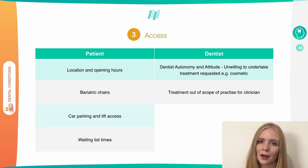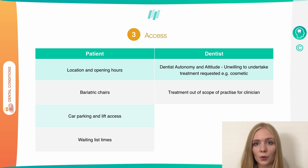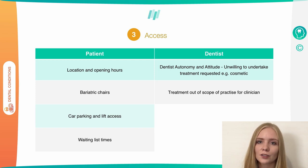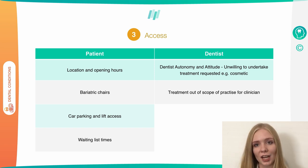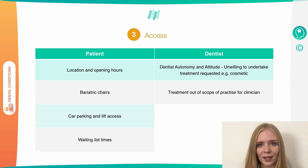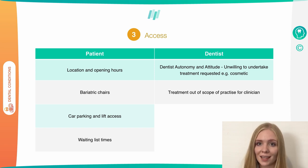When it comes to access, there are other barriers to oral care. For the patient, it might be the location and opening hours of the dental practice — maybe they work nine to five and the practice is only open then and they can't miss work. Another factor to consider is bariatric chairs: some patients are too heavy for the chairs available in general dental practice, and if a patient is too heavy they can't be treated there and may need to be referred to a hospital which has appropriate chairs. So this is an access barrier relevant to overweight patients.